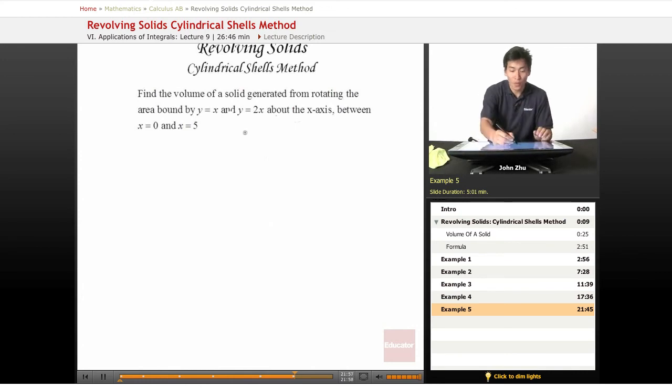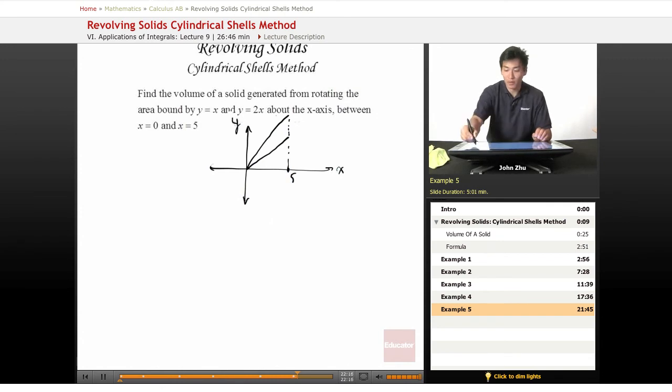So we have y equals x here. So y equals x and y equals 2x. So from 0 to 5. So we don't care about anything outside of that bound.